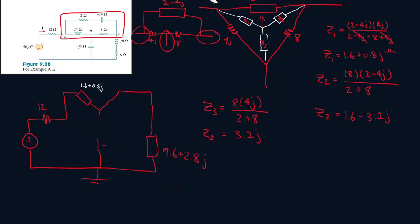Now I'm going to combine these two, so 3.2j minus 3j, that's 0.2j. And then let's combine these two, so 12 plus 1.6, that's 13.6. Obviously I can't combine anything else, so it'll be 13.6 plus 0.8j.